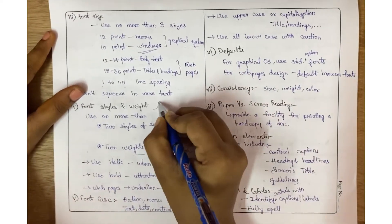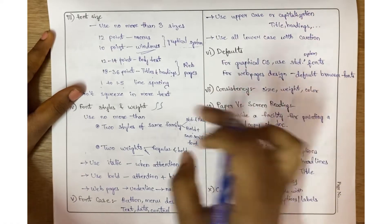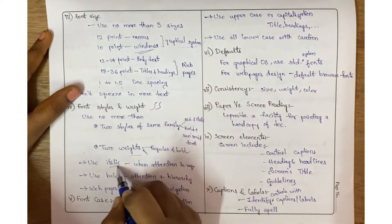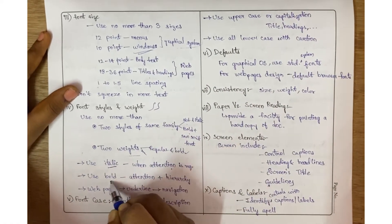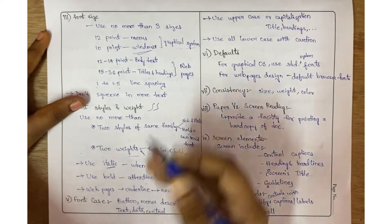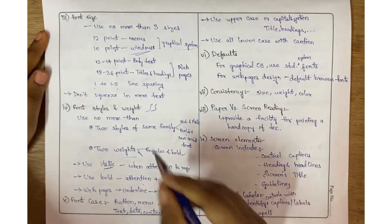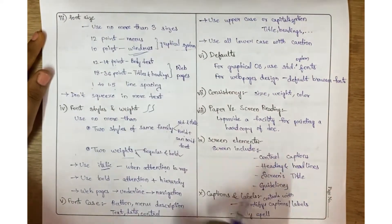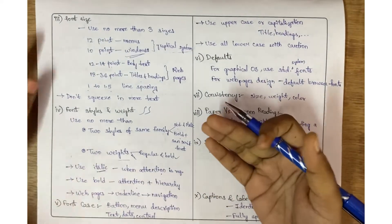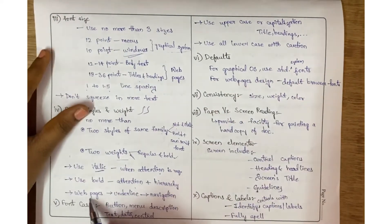If you're using bold, it's for attention and for hierarchy. If I'm writing titles all in bold letters, I'm maintaining some hierarchy for the headings part. For web pages, use underlines only for navigation.